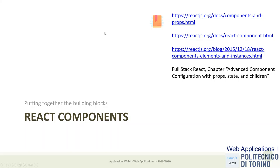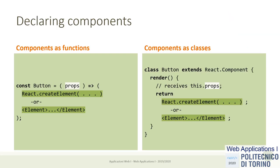After all the information we had about elements and JSX syntax, defining a component is comparatively much easier. There are two separate syntaxes in React to define a component. The simple one is just a function — a function that receives some properties as a parameter and returns a React element, which you can create explicitly or use JSX to create.